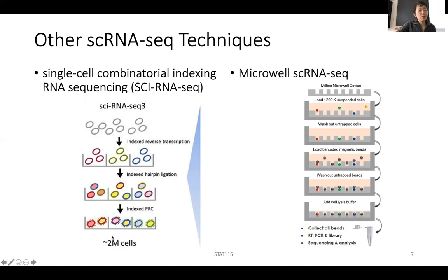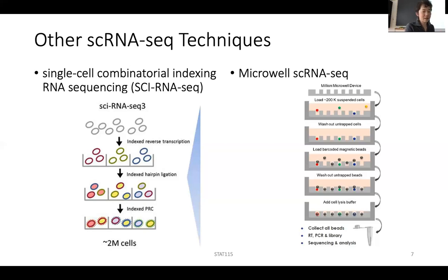This approach can scale up remarkably — recently there was a paper profiling 15 million cells in one experiment, which is mind-boggling. Of course, sequencing also has to be done quite deeply, but the reagent cost per cell is lower. Data quality is still being developed, and right now only a few labs can do this experiment.